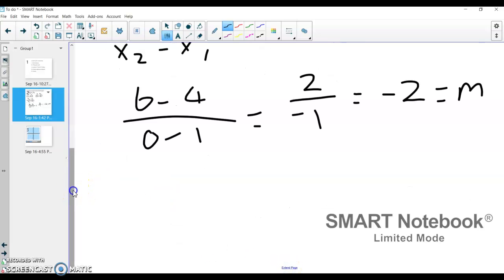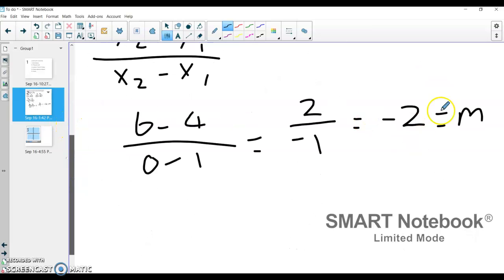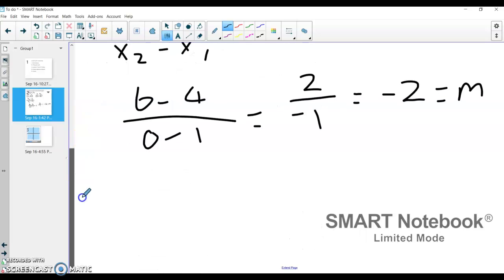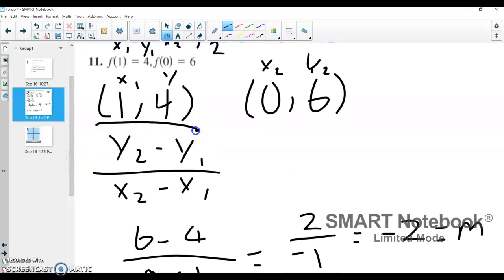Now what I have is a point. I have one point on the line, and I have a slope. And so I'm going to use my point-slope form, which is y minus y1 equals mx minus x1. And at this point, you can choose either point. You can choose the 1 comma 4, or you could choose the 0 comma 6. I'm going to choose the 0 comma 6.